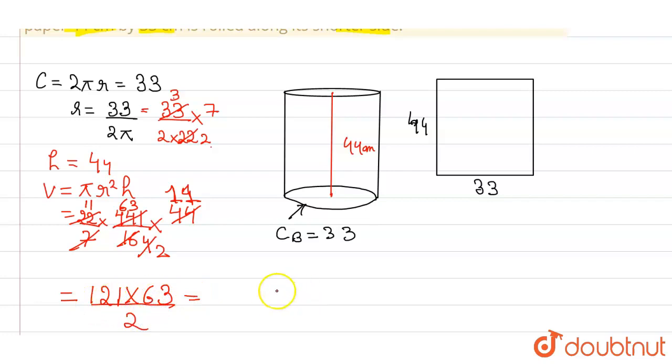63 into 1 is 63, carry 6. 63 into 2 is 126 plus 6 equals 132. 63 into 1 is 63 plus 13 equals 76, divided by 2. This gives 3811.5. So this will be your volume.